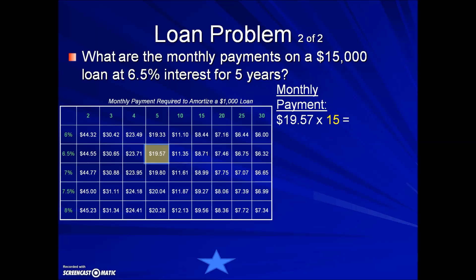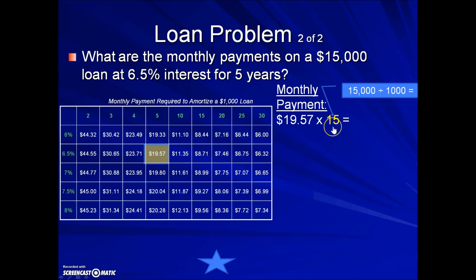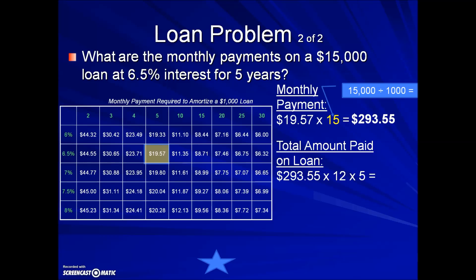It's a loan for $15,000, which is 15 times as much as the table is set up for. If you take the loan amount divided by $1,000 from the table, it gives us a multiple of 15. So taking the value from the table and multiplying it by 15, we have calculated the monthly payment for this loan. Each month, this individual will pay $293.55.